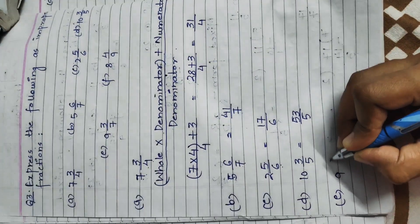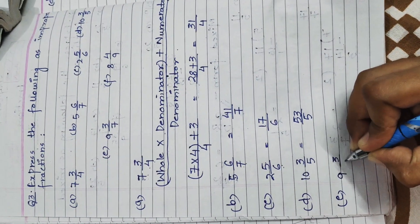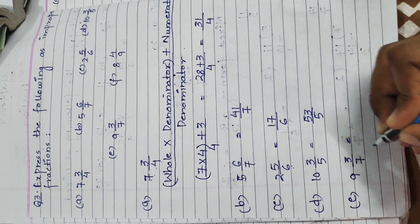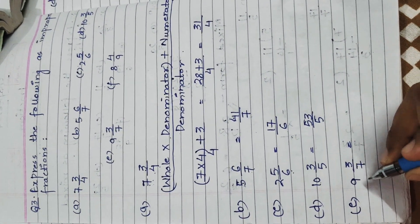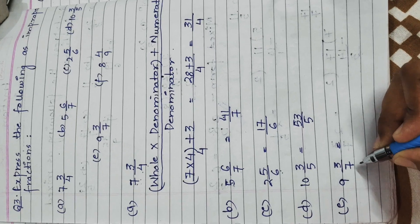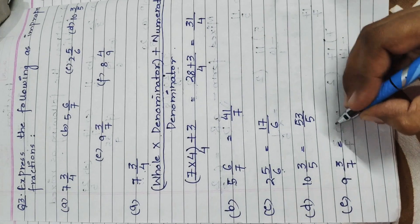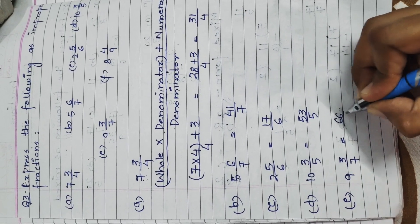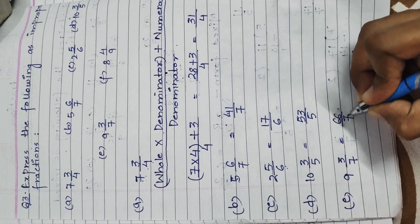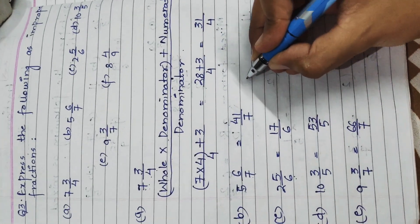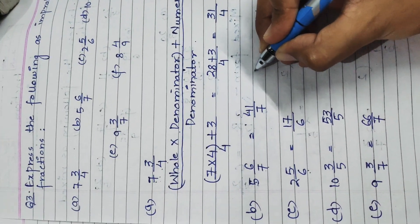Part E is 9 whole 3 upon 7. 9 × 7 = 63, and 63 + 3 = 66. The answer is 66 upon 7.